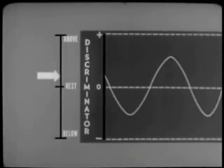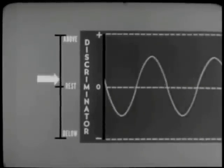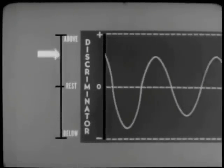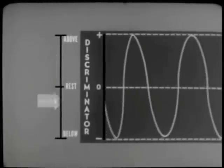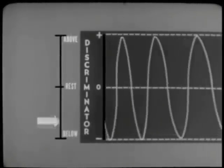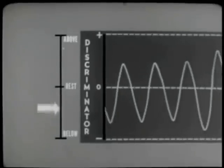Thus, the audio signal's two characteristics — its amplitude and its frequency — are an accurate reflection of the carrier's amount of deviation and rate of deviation. In this way, we have transformed an RF carrier's frequency variation back into an audio frequency signal. From the discriminator, the audio goes into an audio amplifier and from there to a speaker or headphone. The intelligence has completed the trip from transmitter to receiver.